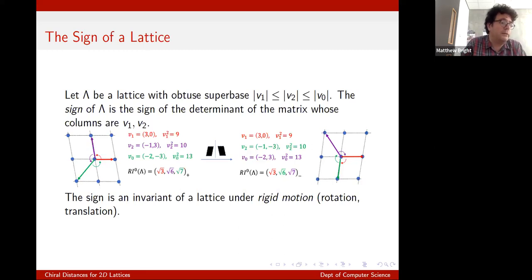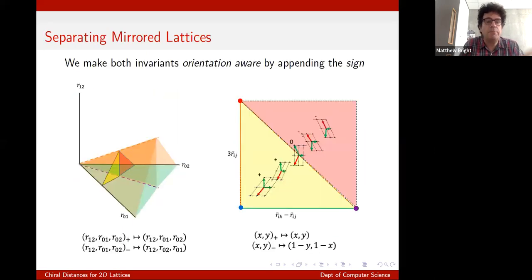And again, the boundaries of the space are either empty, in the case of this lower right-hand vertex, which is where, in theory, lattices become infinitely long and thin, and it's sort of geometrically impossible, or they contain lattices with higher symmetry, all of which have a mirror symmetry in two dimensions. So every single one of these lattices on the boundaries is not chiral. So to finally get to chirality, there is a way to distinguish, thanks to the root invariant, between mirror images of lattices by using what we call the sine. If we order the shortest two vectors in the obtuse super base, make their columns into a matrix and take the determinant, that's an invariant of a lattice under rigid motion. So by rigid motion we mean rotation and translation only, no reflection. So you can then distinguish between two mirror images of a lattice.